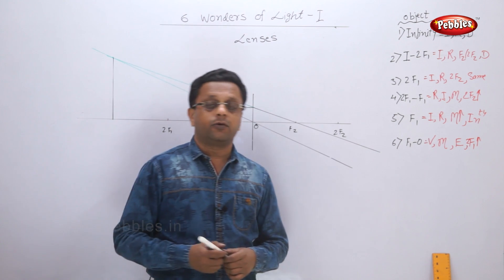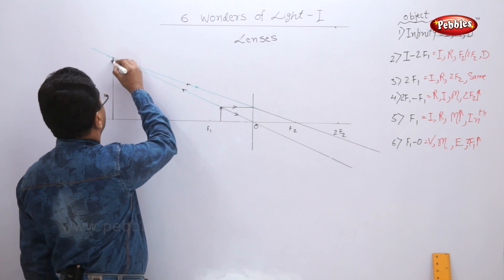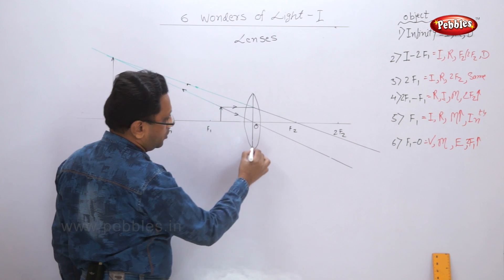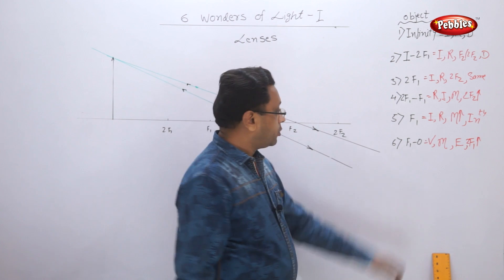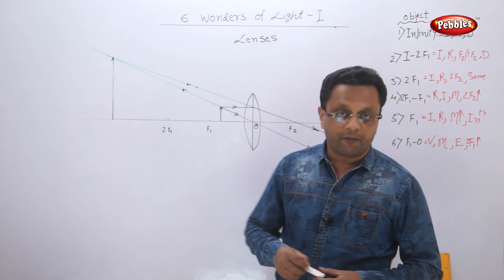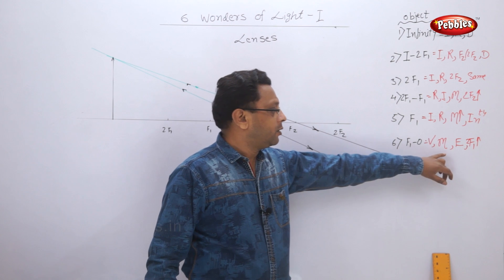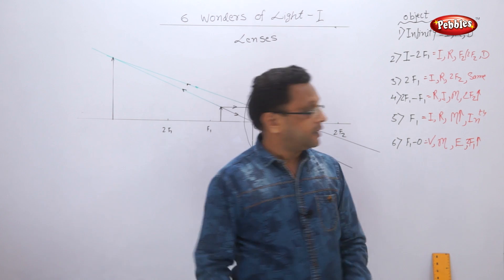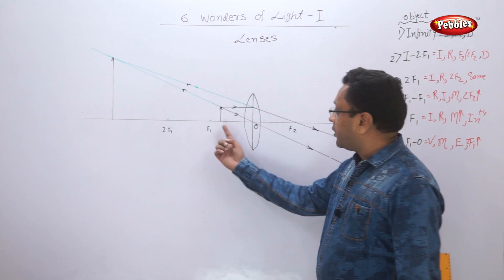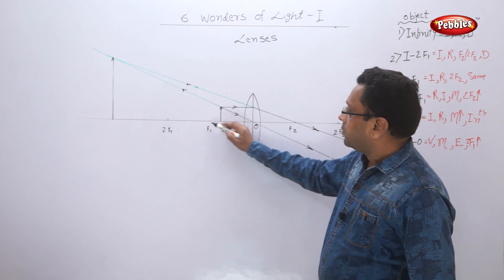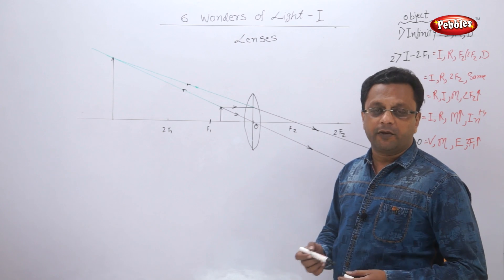Always remember to complete your figure — show all rays with arrows, draw the lens at the end, and write the image properties clearly. For the object between F1 and O: image is virtual, highly magnified, erect, on the same side as the object, and beyond F1. The exact position depends on where the object is placed.